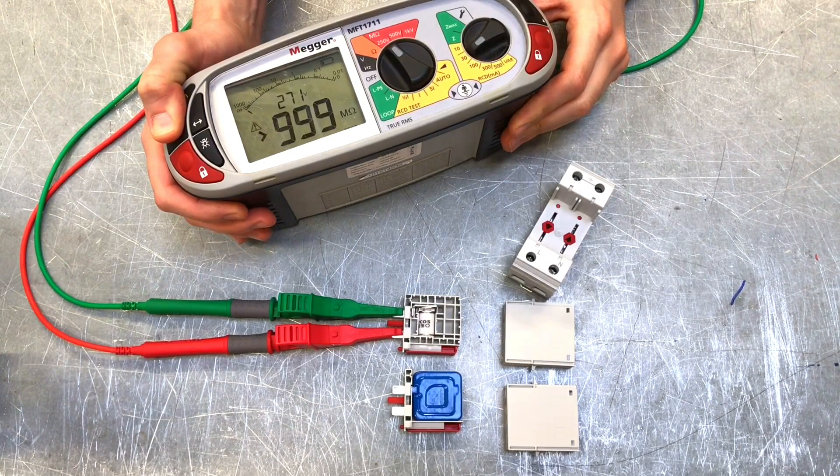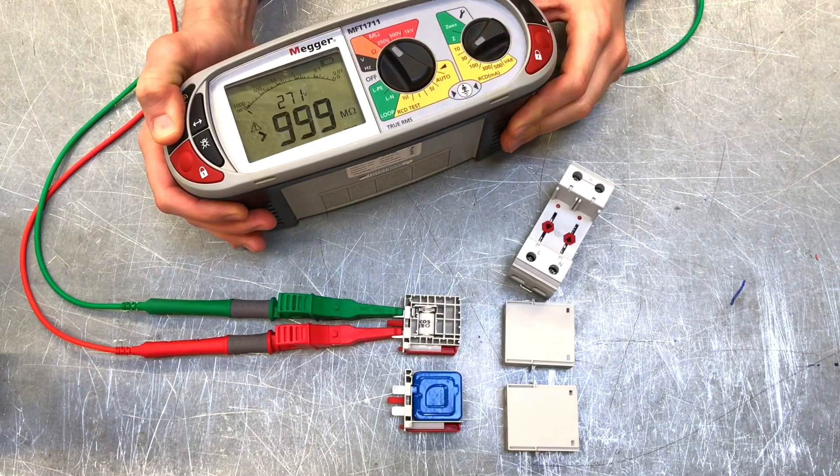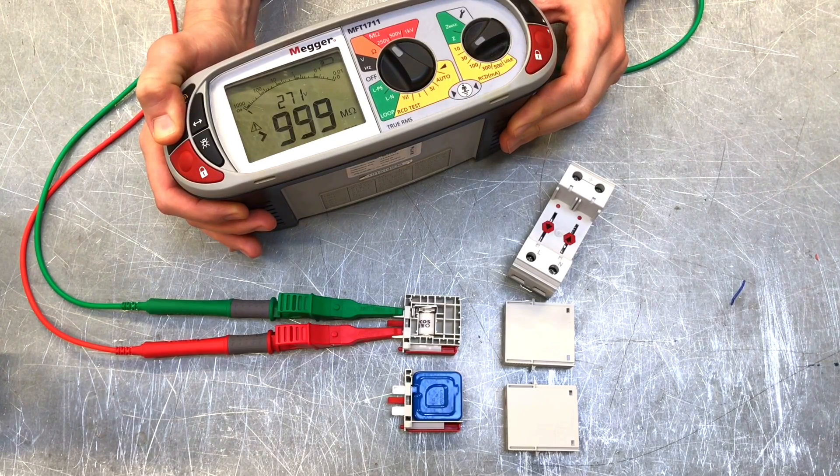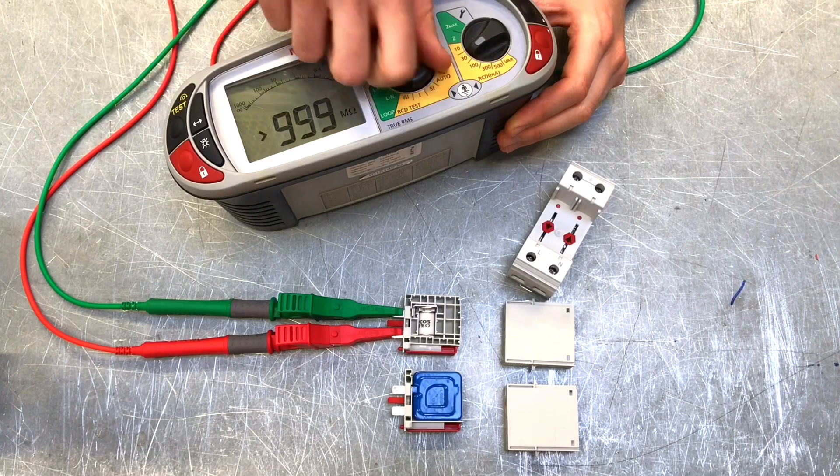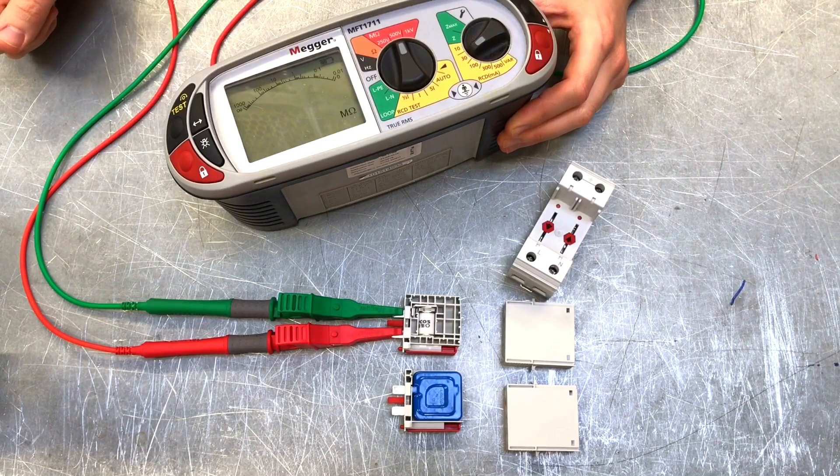So we're somewhere near nominal voltage. Obviously this is DC, not AC, but it's a similar principle. We've got a very, very high resistance there. Okay then, Joe. Let's move it up then to 500 volts and see if we can get the same reaction we got previously.